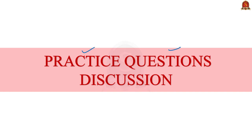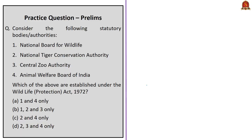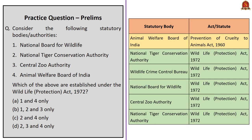Now for the practice questions discussion. The first question asks which of the given statutory bodies — National Board for Wildlife, National Tiger Conservation Authority, Central Zoo Authority, and Animal Welfare Board of India — are established under the Wildlife Protection Act of 1972. The correct answer is option B: 1, 2, and 3 only. The Animal Welfare Board of India is established under the Prevention of Cruelty to Animals Act of 1960, not the Wildlife Protection Act 1972, while the other three are established under the Wildlife Protection Act.